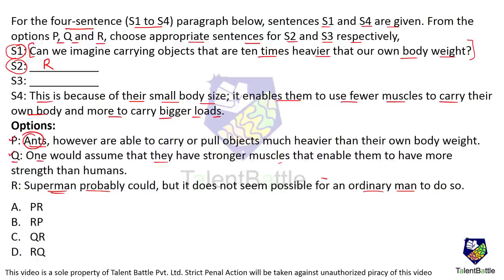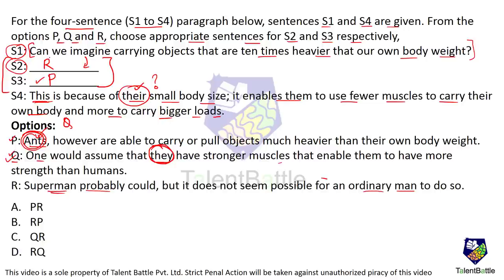Statement Q says 'one would assume they have stronger muscles than humans' — someone is being compared to humans, and ants are being introduced in these sentences, so 'they' must mean ants. Only R is related to humans after S1, so R becomes S2. Now check S4: 'This is because of their small body size' — 'their' refers to ants, not humans. So ants must be introduced earlier, meaning P comes next. Then Q follows, because it also uses 'they' to mean ants. So the best possible combination for S2 and S3 is R and P.